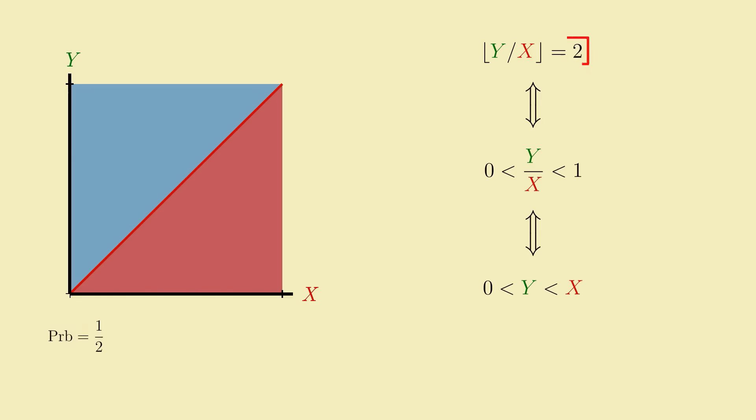From here, we can move on to the next even number, 2. If y over x floors to 2, then that means it must be between 2 and 3, which corresponds to points that are between the lines y equals 2x and y equals 3x in the unit square. This will have area 1 half times 1 half minus 1 third, which will add to our probability in progress.